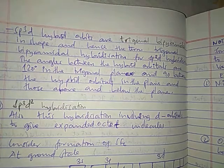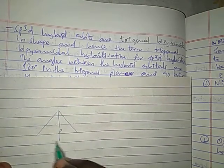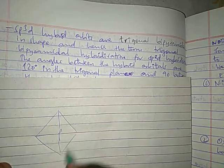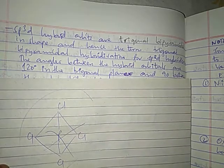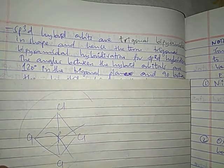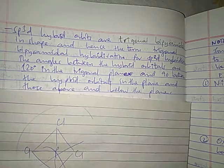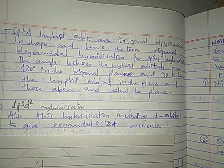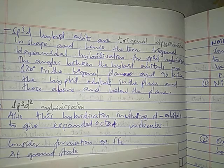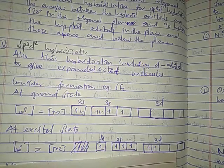The shape of phosphorus pentachloride in sp3d hybridization is trigonal bipyramidal. In this shape, phosphorus is at the center with five chlorines arranged around it. The bond angles are between 90 and 120 degrees.